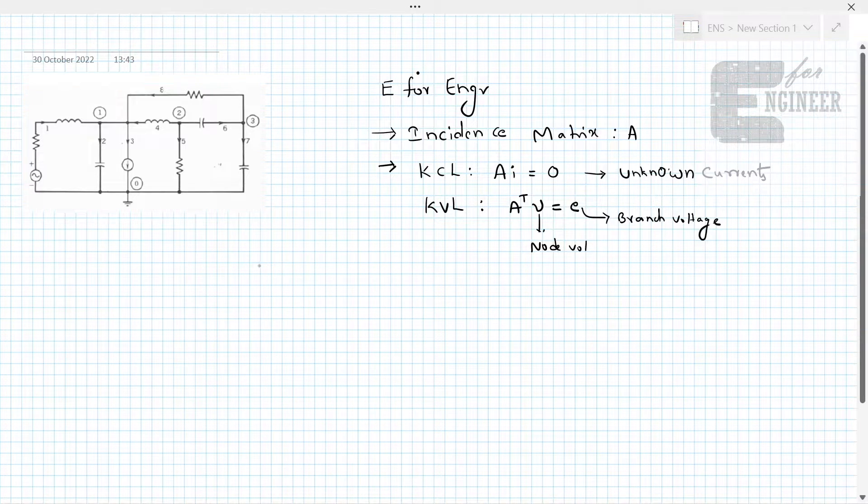So, let us dive into writing this incident matrix. The size of this incident matrix is given as n minus 1 by B. This n is number of nodes in the circuit.